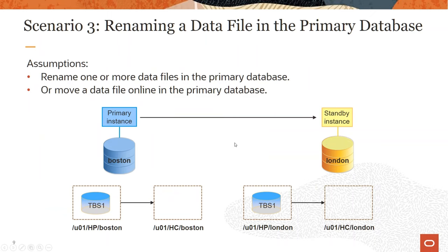Scenario 3 is renaming a data file in the primary database — meaning migrating a data file from one mount point to another mount point. If you make any storage migration in the primary database, you need to handle the corresponding change in the standby database.